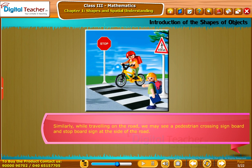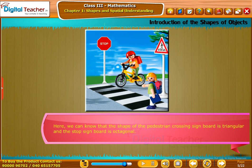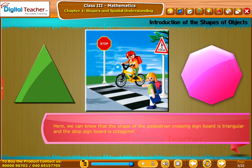Similarly, while traveling on the road, we may see a pedestrian crossing sign board and stop board sign at the side of the road. Here we can know that the shape of the pedestrian crossing sign board is triangular and the stop sign board is octagonal.